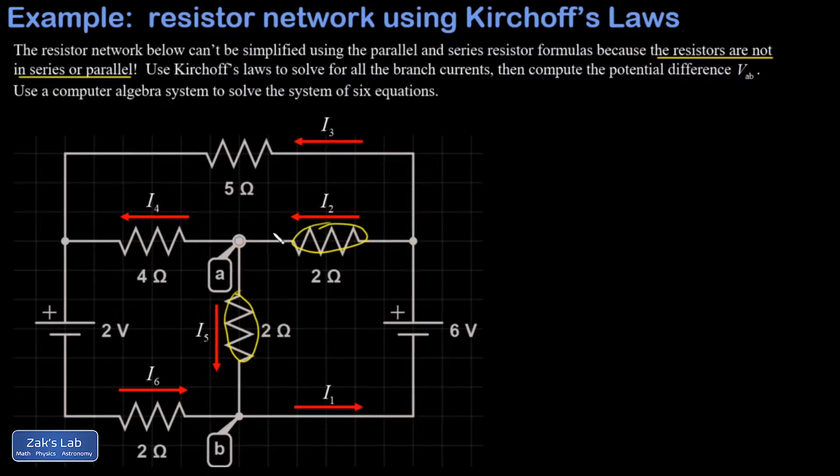If you think they're in series, that's wrong, because whatever current is passing through this one gets split at this node. So the two resistors can't possibly have the same current going through them, which is the defining characteristic of series resistors. So we're stuck having to use a different tool set, and that's Kirchhoff's Laws.